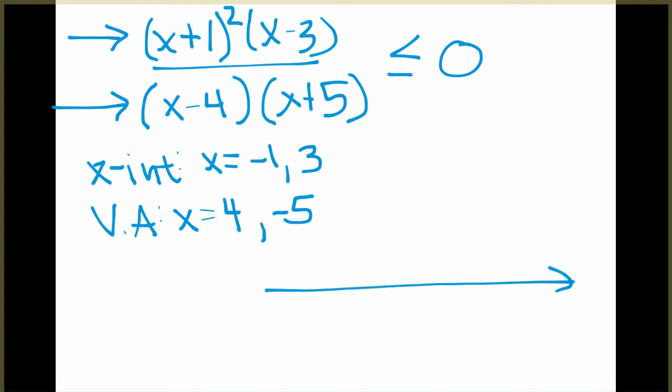So if we make a rough sketch again of our graph, we can label these values on the graph. So I'll put negative 1 right here. That's an x-intercept. So it will go through that point. 3 here, another x-intercept.